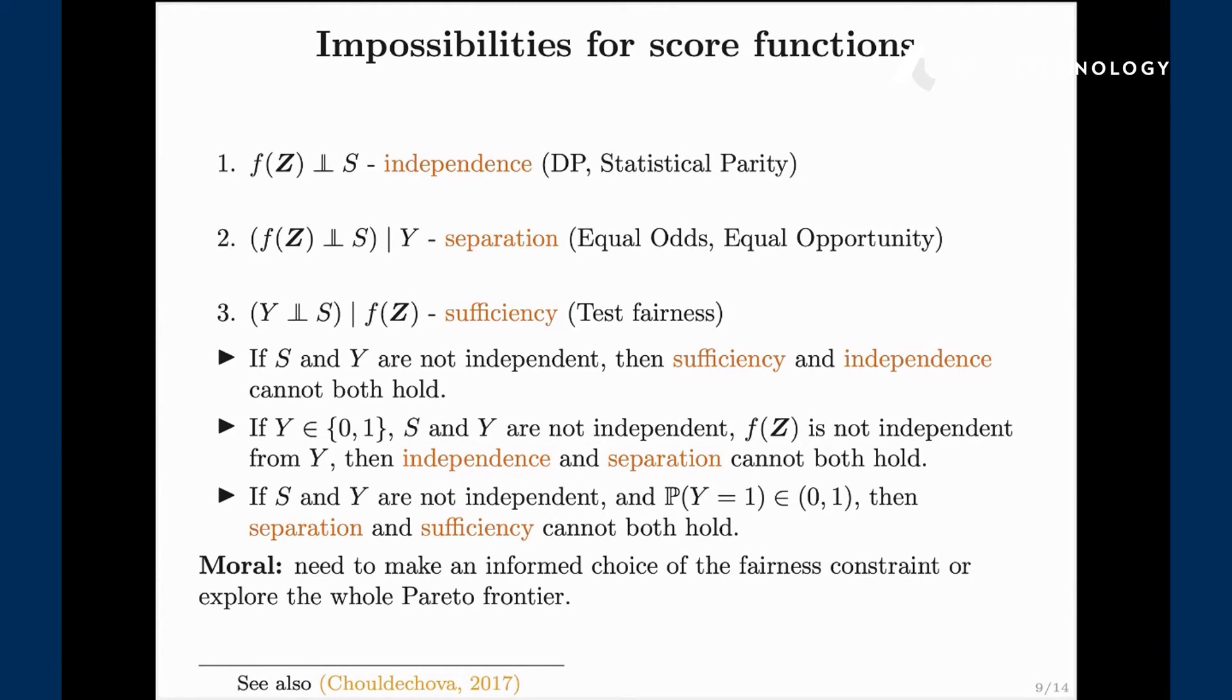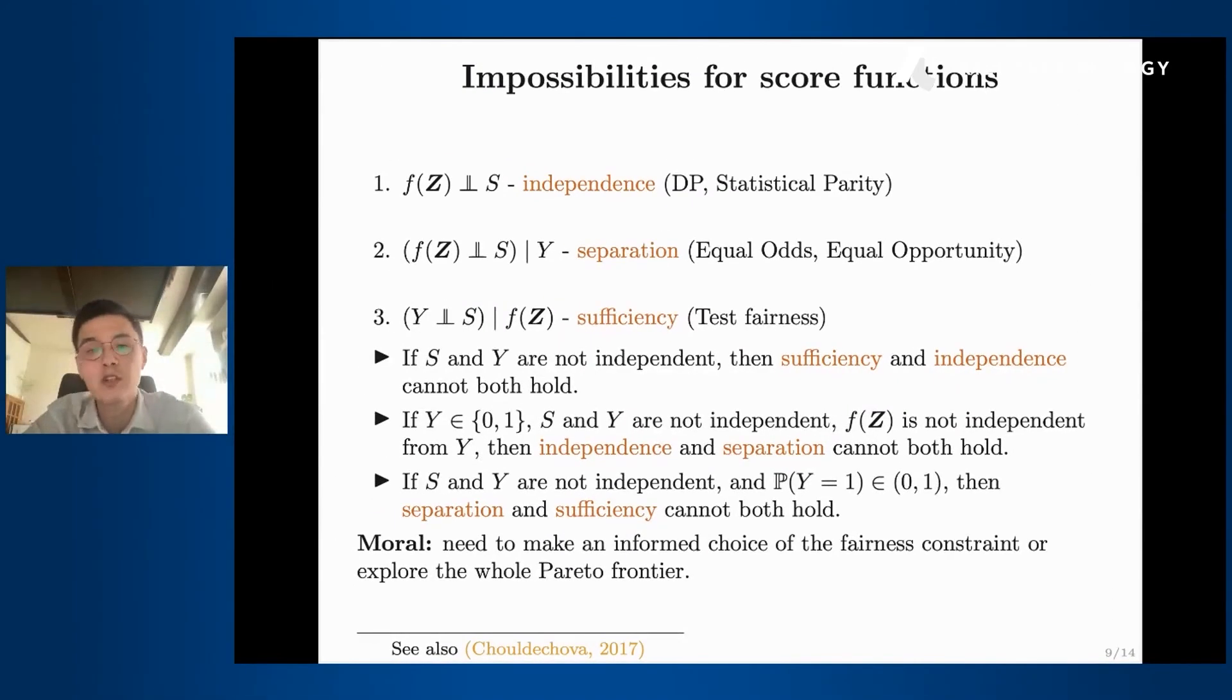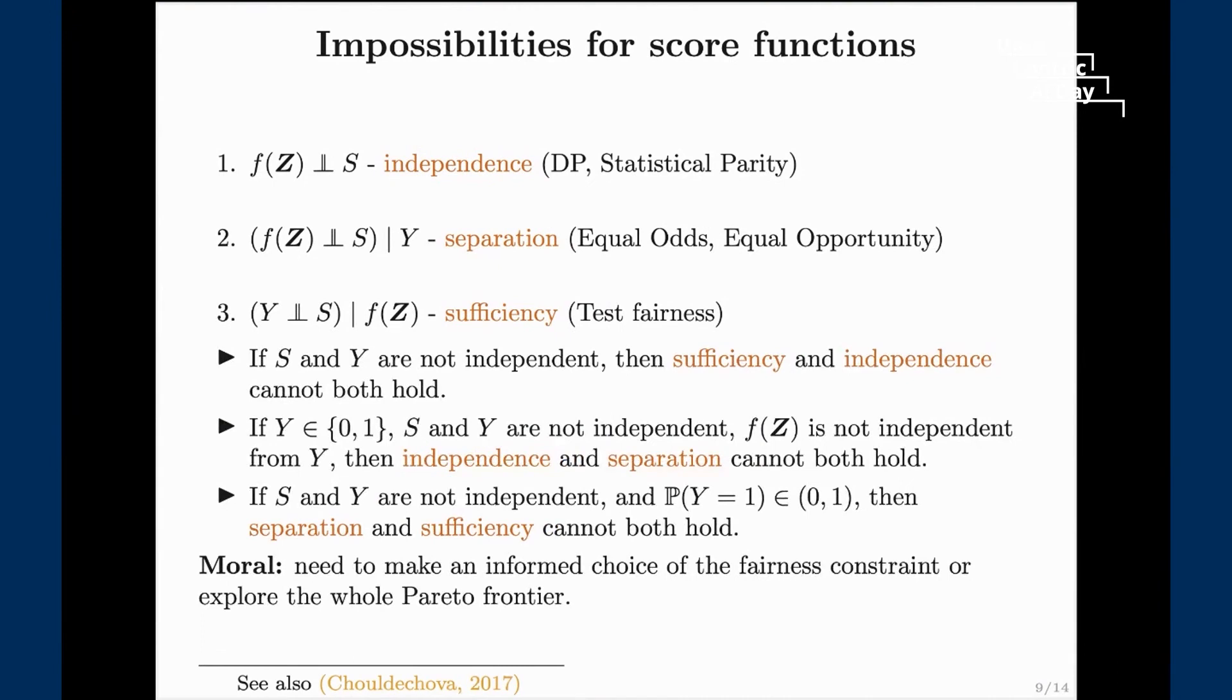The more complicated direction is to explore actually the whole Pareto frontier of these three definitions. Because impossibility tells you that you cannot satisfy them exactly, but what if you're fine to sacrifice a bit of independence to gain a bit of separation, and you're fine to sacrifice a bit of sufficiency to gain a bit of independence? In that case the problem becomes quite complex. You have three criterias to play around and you can start exploring the whole Pareto frontier of the three. Let's assume that we managed to fix one definition, let's say we choose independence and we believe that this is a good definition for our application. The question is what kind of approaches do we have in order to achieve independence?